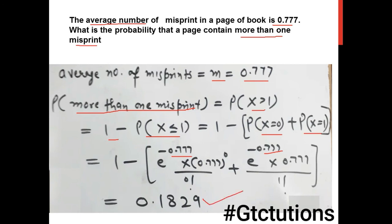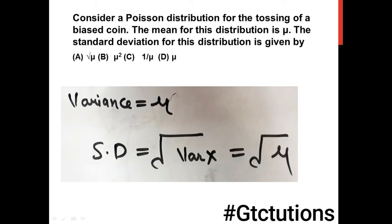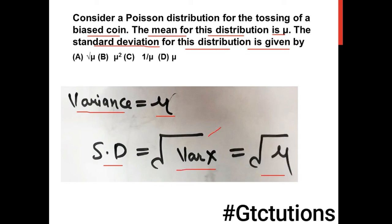Example 3: Consider a poison distribution for the tossing of a biased coin. The mean is given as mu. In the poison distribution, mean equals variance, so variance is mu, and standard deviation is the square root of variance, which equals root of mu. This is how you can solve problems related to poison distribution.